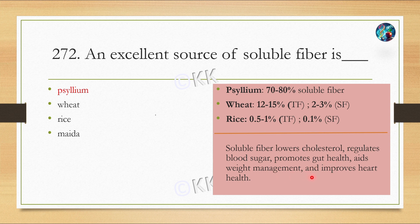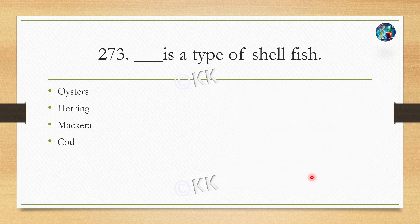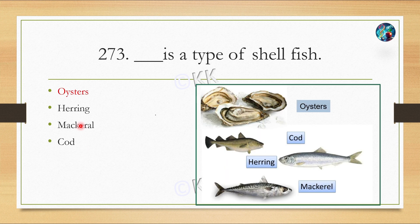Let's move to our next question. Dash is a type of shellfish: option A, Oysters; option B, Herring; option C, Mackerel; option D, Cod. The correct answer is option A — Oysters.